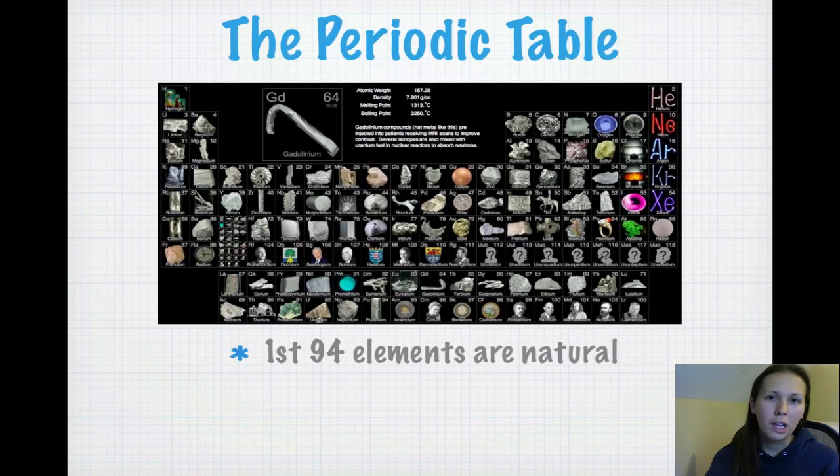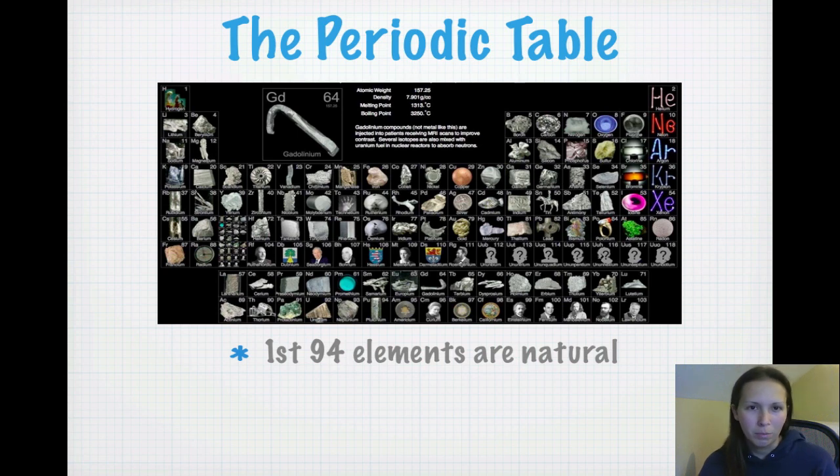Just to start, a lot of you said that elements are the natural elements that occur on the periodic table. And that's true to a point. The first 94 elements are actually natural elements that occur in nature, but the rest of them are actually man-made. And a lot of them, as you can see on this periodic table here, haven't even been named yet.